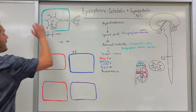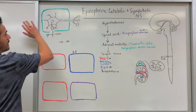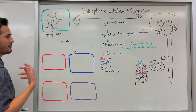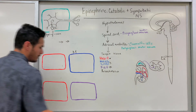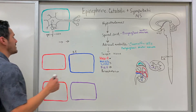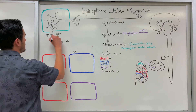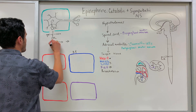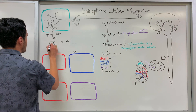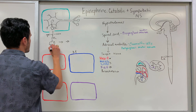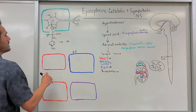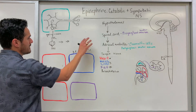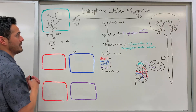So this chromaffin cell and motor neuron — how is epinephrine synthesized? We use an amino acid known as tyrosine. This is what tyrosine looks like: you have a cyclic ring and also a hydroxyl group (OH group). Within the adrenal medulla we have enzymes that will synthesize our catecholamines.